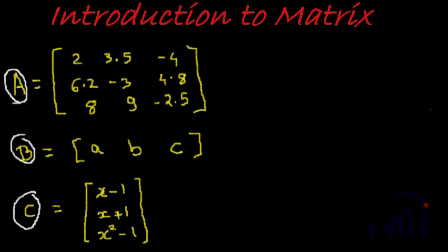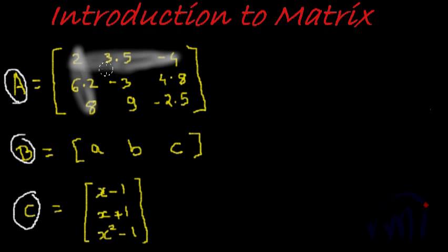Now let's take a closer look at these matrices and see how we can describe them. Let's take a closer look at A. A is a matrix which has, if you see, this 2, 6.2, and 8 is a column, and 2, 3.5, and minus 4 is a row. This matrix has numbers arranged in rows and columns. When we count, we have 1, 2, 3 rows and 1, 2, and 3 columns. So matrix A has three rows and three columns. Hence this matrix would be described as a matrix of order 3 by 3.